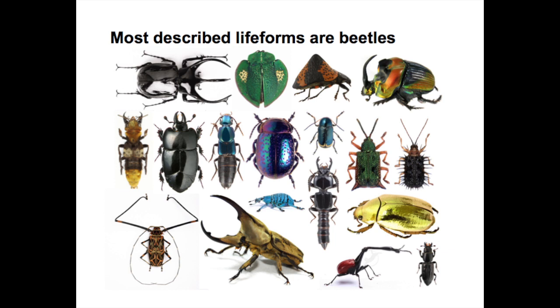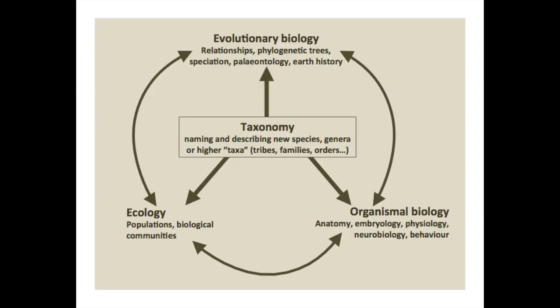To get to 400,000 species, for the past 250 years people have been collecting beetles throughout the world, putting pins through them, giving them names, writing species descriptions, sometimes doing an illustration or photograph, and putting them into museums. That description and the information about where these things are deposited is of use to entomologists throughout the world. This branch of biology is called taxonomy — the naming and describing of new species, new genera, and new higher taxa, such as families, orders, and phyla.